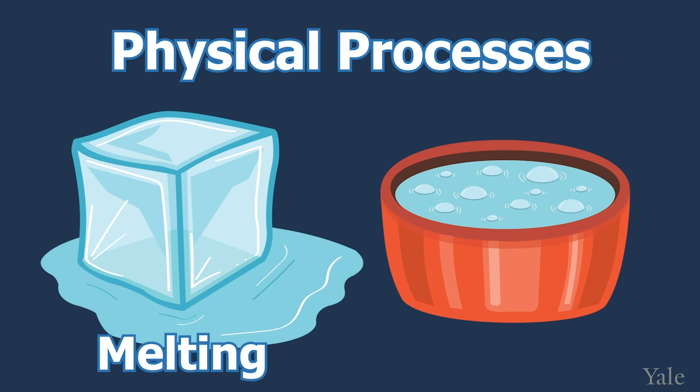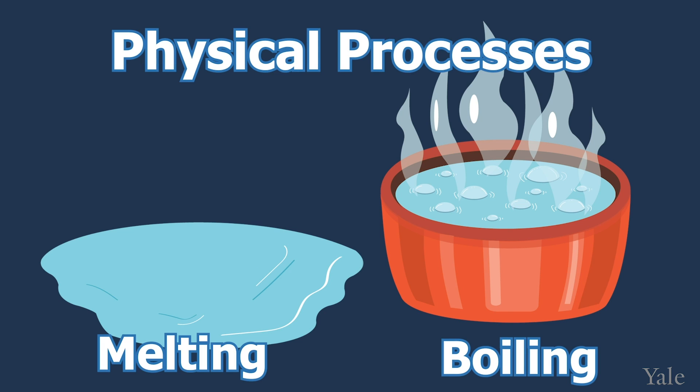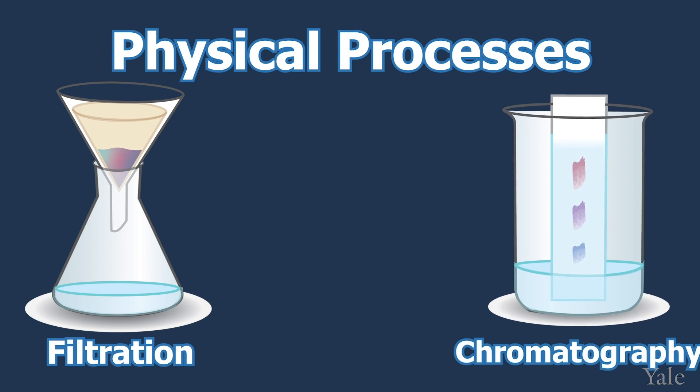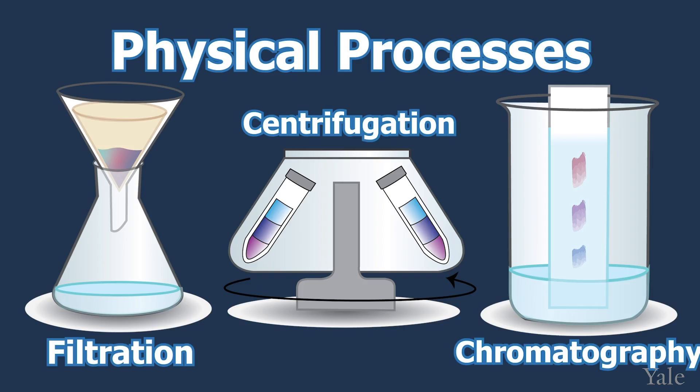Physical processes include melting, boiling, or a process which separates a mixture of chemicals into its components, such as filtration, chromatography, and centrifugation. However, anything that causes a chemical reaction and rearranges those atoms into a new molecule, like burning wood into ash, is not a physical process.